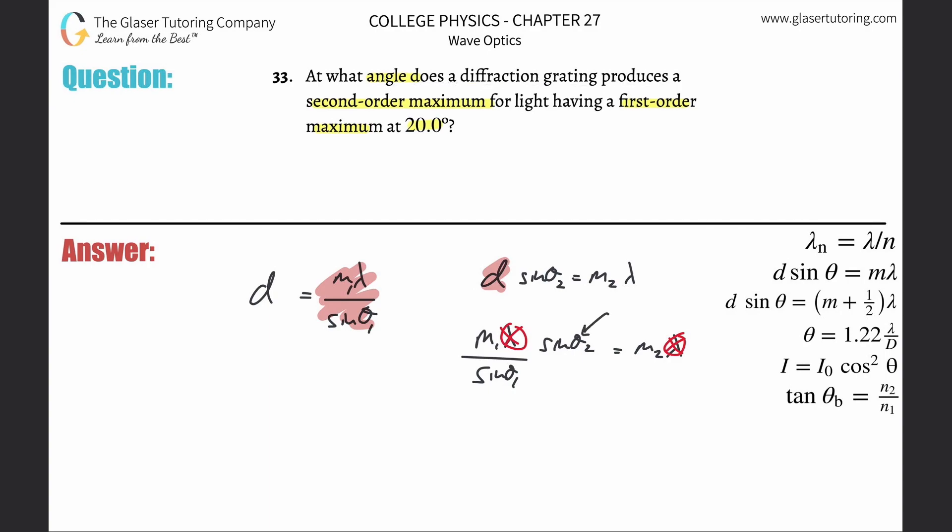Now all I'm going to do is bring this value up into the numerator on the right, bring this down into the denominator on the right, and then we'll have it solved for sine theta 2.